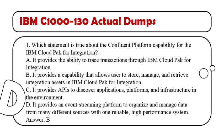C. It provides APIs to discover applications, platforms, and infrastructure in the environment. D. It provides an event streaming platform to organize and manage data from many different sources with one reliable, high-performance system. Answer: B.